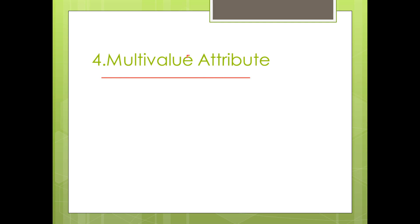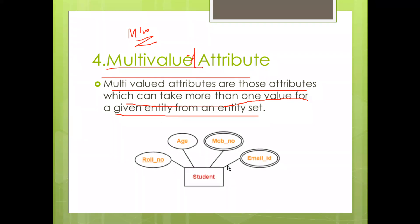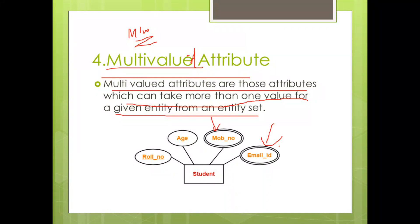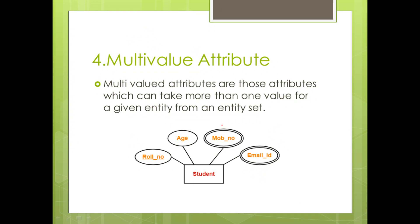Next is multi-valued attribute. Multi-valued attributes are those attributes which can take more than one value for a given entity from an entity set. Multi-valued attributes are represented in the ER diagram by a double ellipse, while single-valued attributes are represented by a single ellipse.